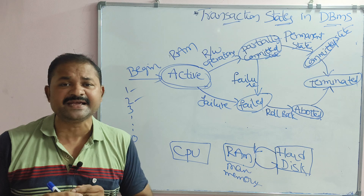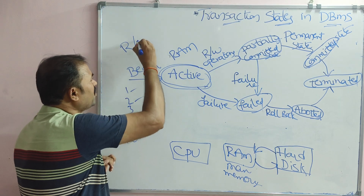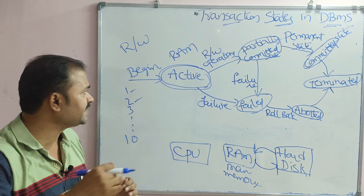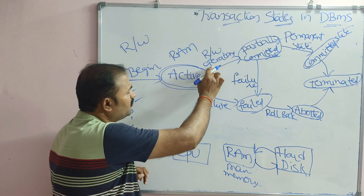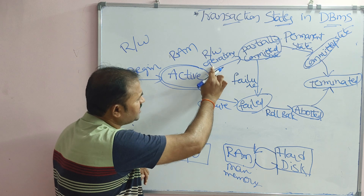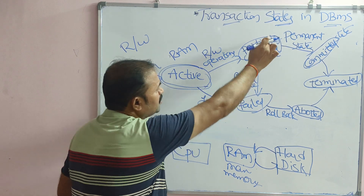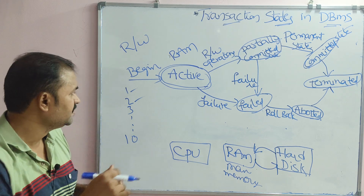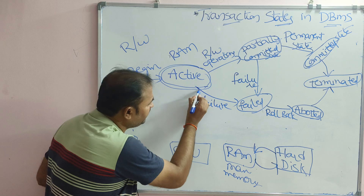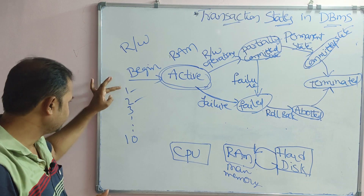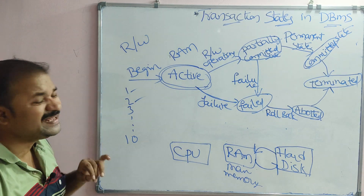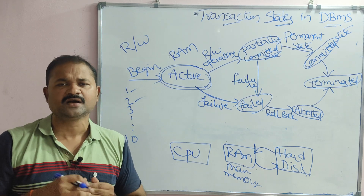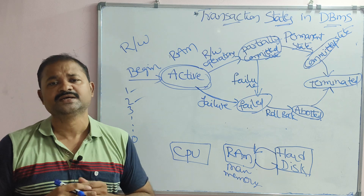A transaction mainly contains read and write operations. Once the read and write operations are completed, the transaction goes into the partially committed state. However, if there is a problem in any instruction — whether a hardware problem or a software problem — then the transaction goes to the failed state.